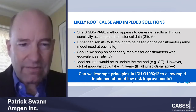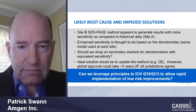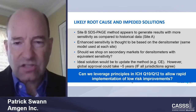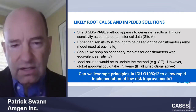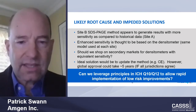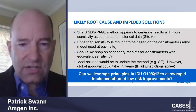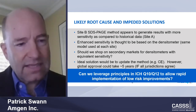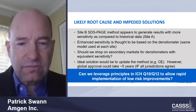Instead, I think we can find a win-win. The ideal solution would be to update the method — for example, to capillary electrophoresis. However, in addition to the One VQ complexity of updating the method globally, there's also a significant timeframe associated with this. I propose it would be better to leverage principles in ICH Q10 and Q12 to allow rapid implementation of low-risk improvements. This would maintain reliability of control of the product, increase agility in our ability to innovate, and achieve efficiency gained not only by the marketing authorization holder but also by health authorities, which then increases availability for our patients.